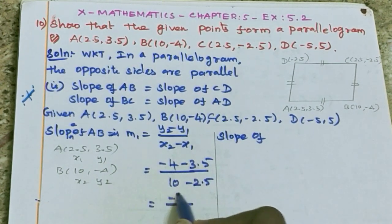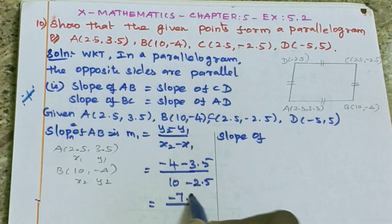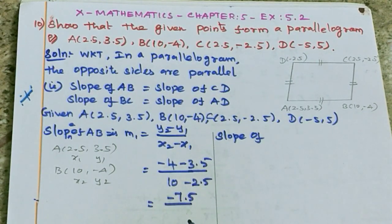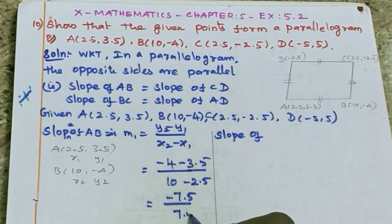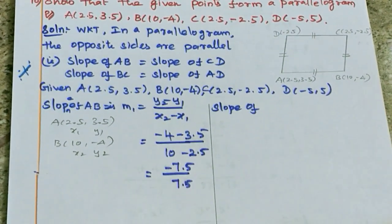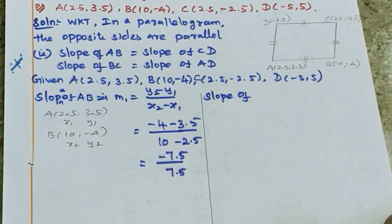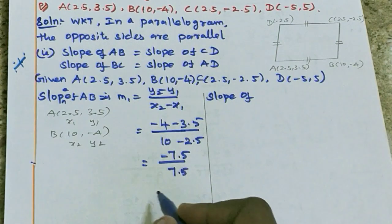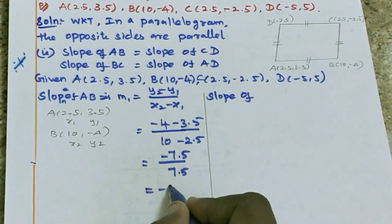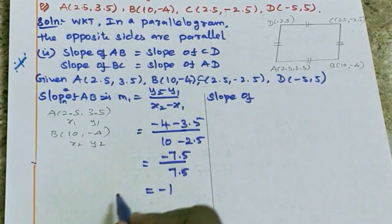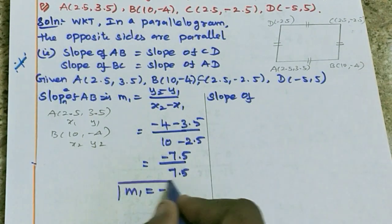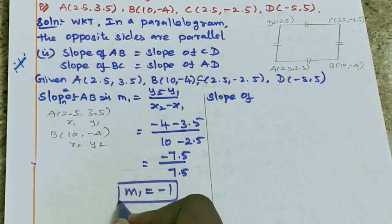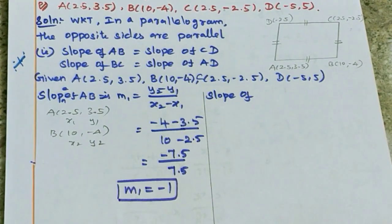So calculating: minus 4 minus 3.5 gives minus 7.5, divided by 10 minus 2.5 which is 7.5. After cancellation, this gives minus 1. So this is M1, that is the slope of AB equals minus 1.